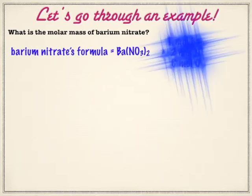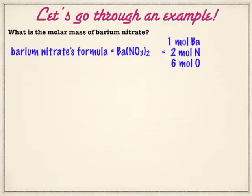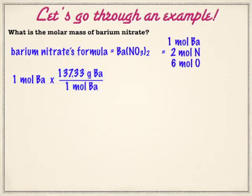So we have one barium, two nitrogens, and six oxygens. Now if you were short on time, you could simply go to your periodic table and add up the molar mass of one barium, two nitrogens, and six oxygens — and that would be the molar mass of barium nitrate. If you're ever on a test and you don't need to show work, that's the quick, easy way. But if we're looking to make sure the units work out and practice our factor label skills, then we can go through this and show all of our work.